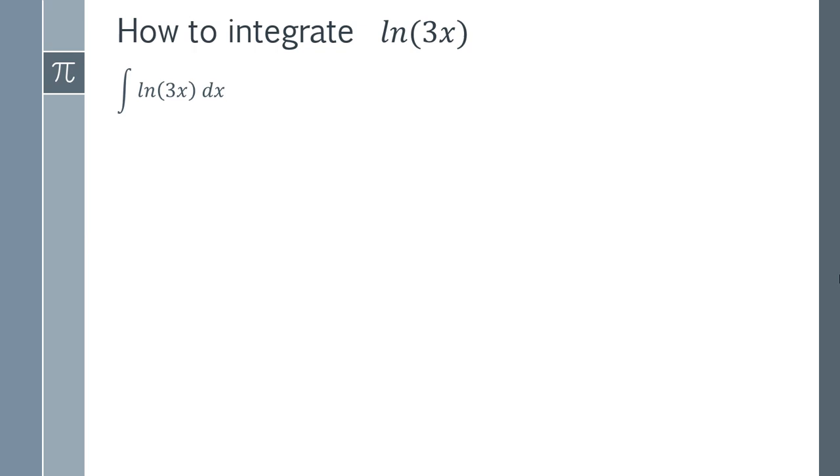So what we actually have to do is do something quite clever and realize that the integral of ln 3x is the same as the integral of 1 times ln 3x because multiplying by 1 doesn't actually change the integration. You think well what's the point of doing that? You've not really changed it but you've actually changed it very slightly.